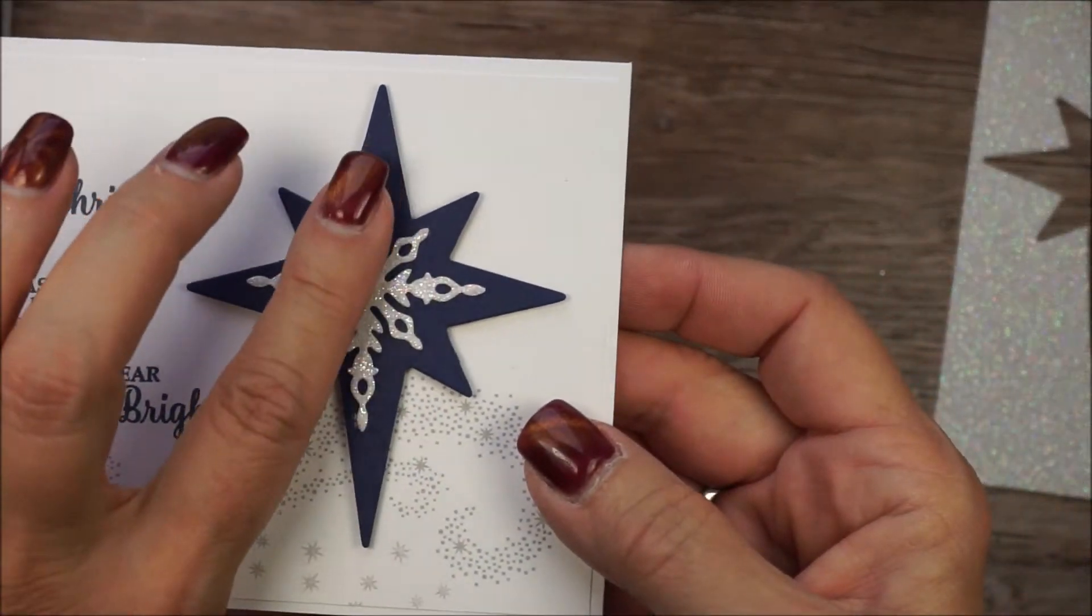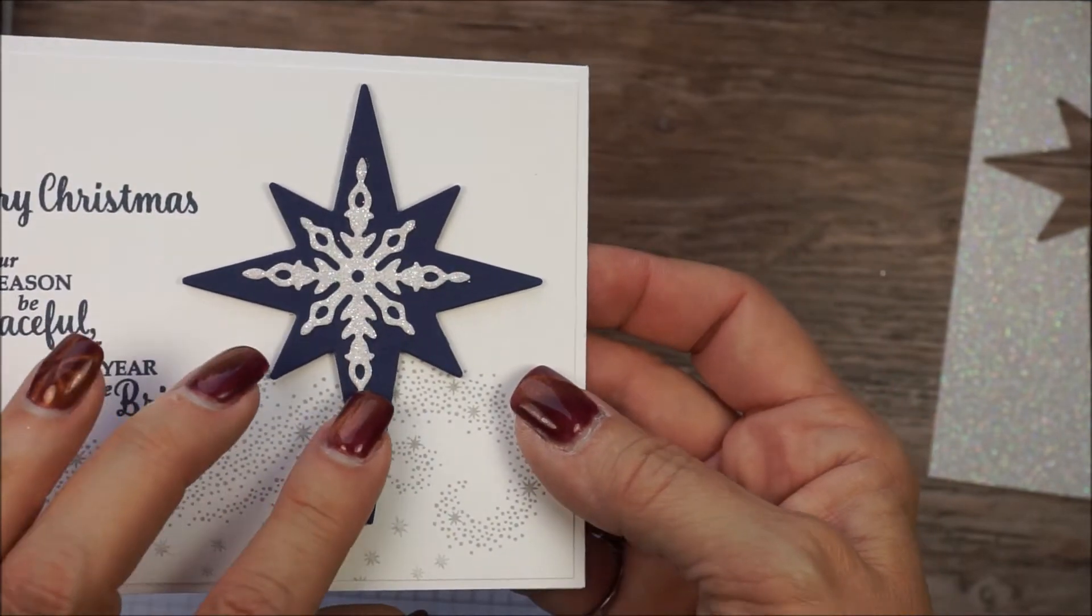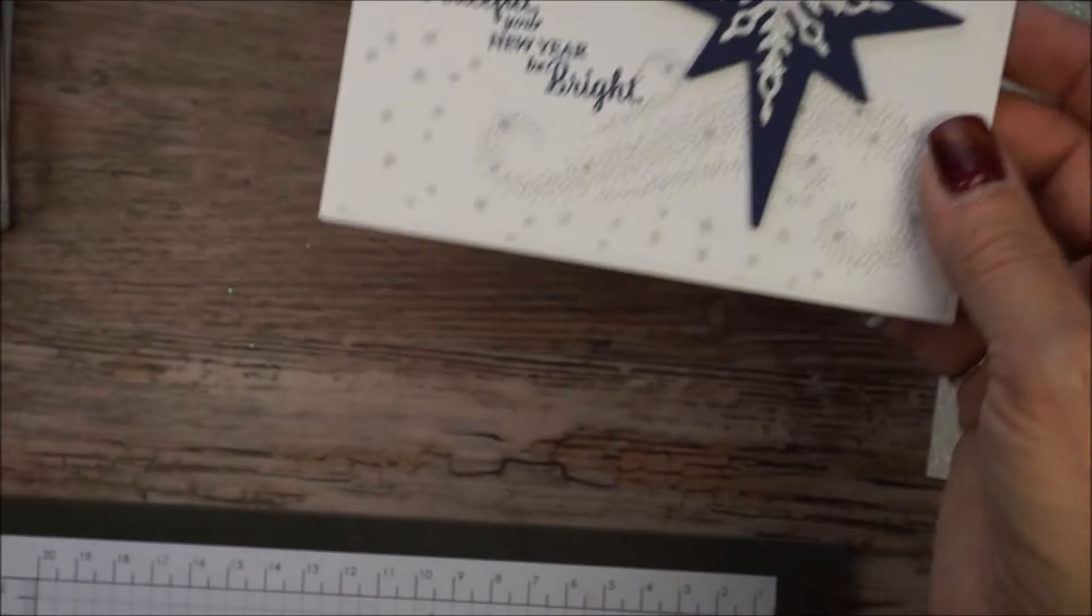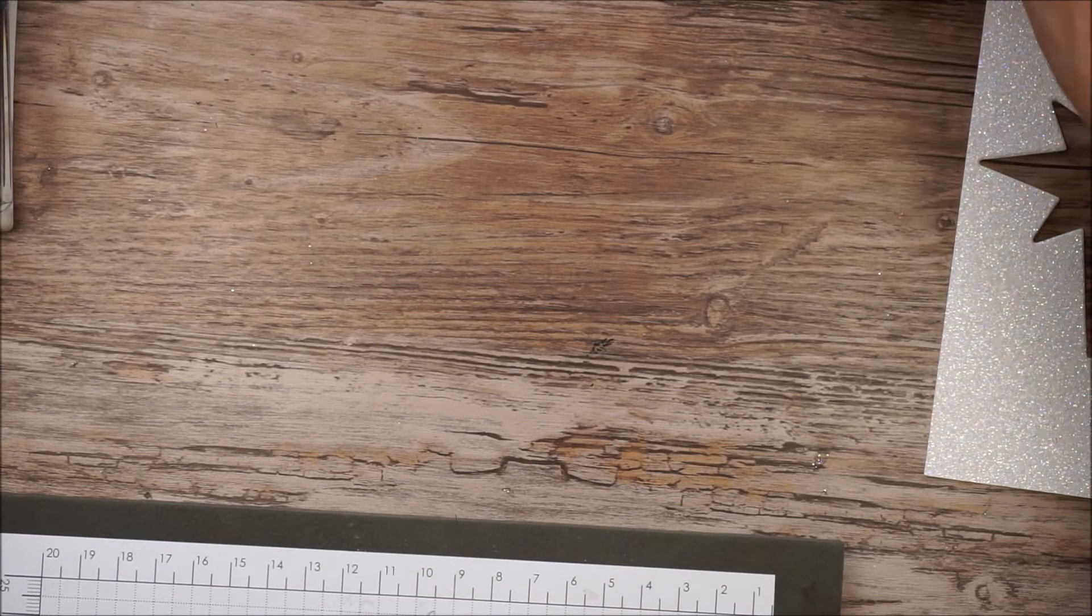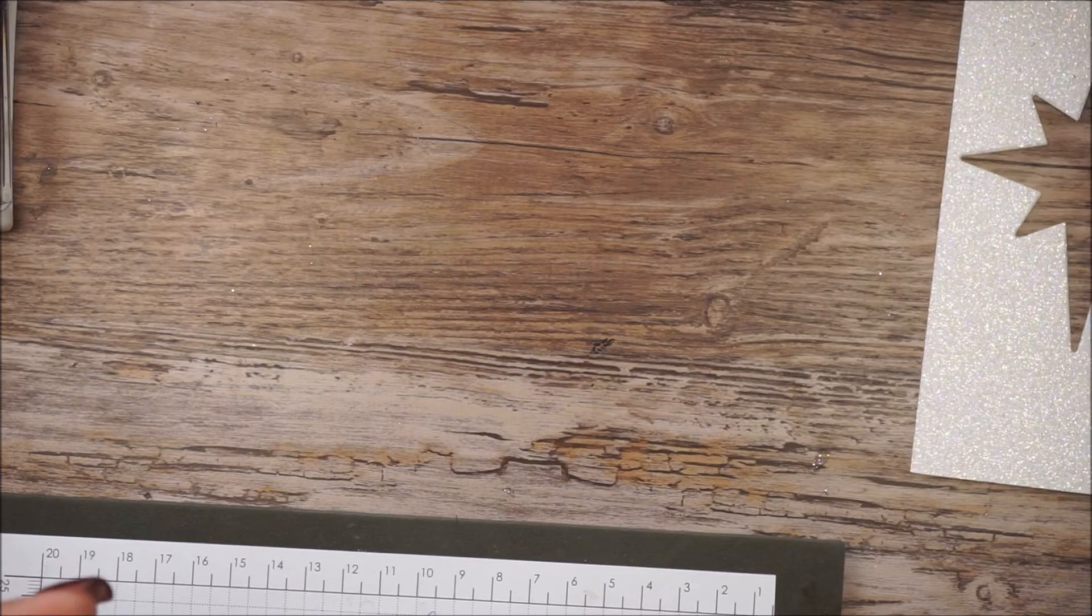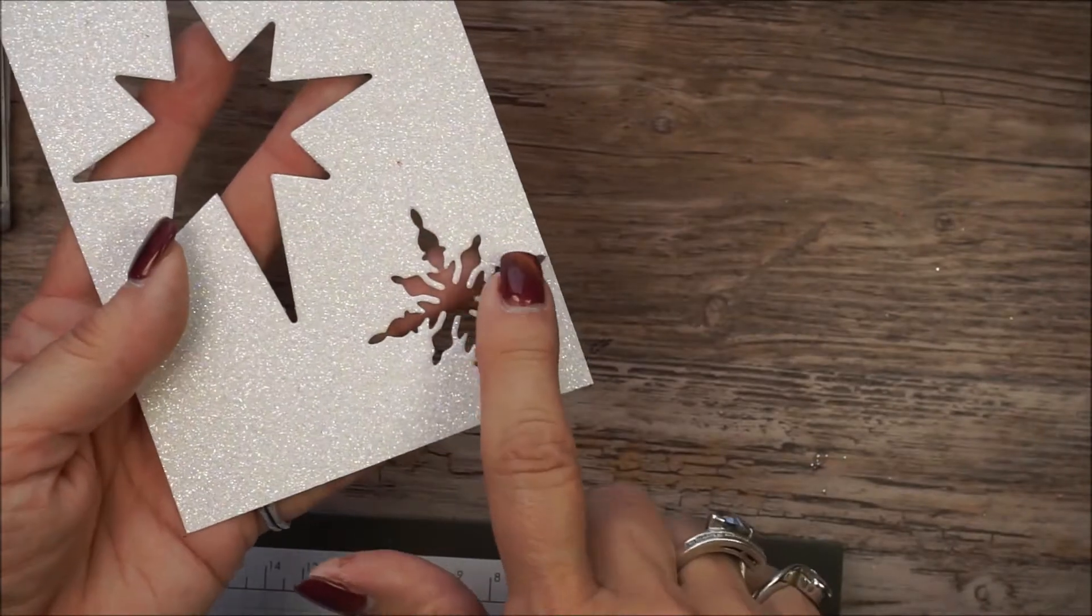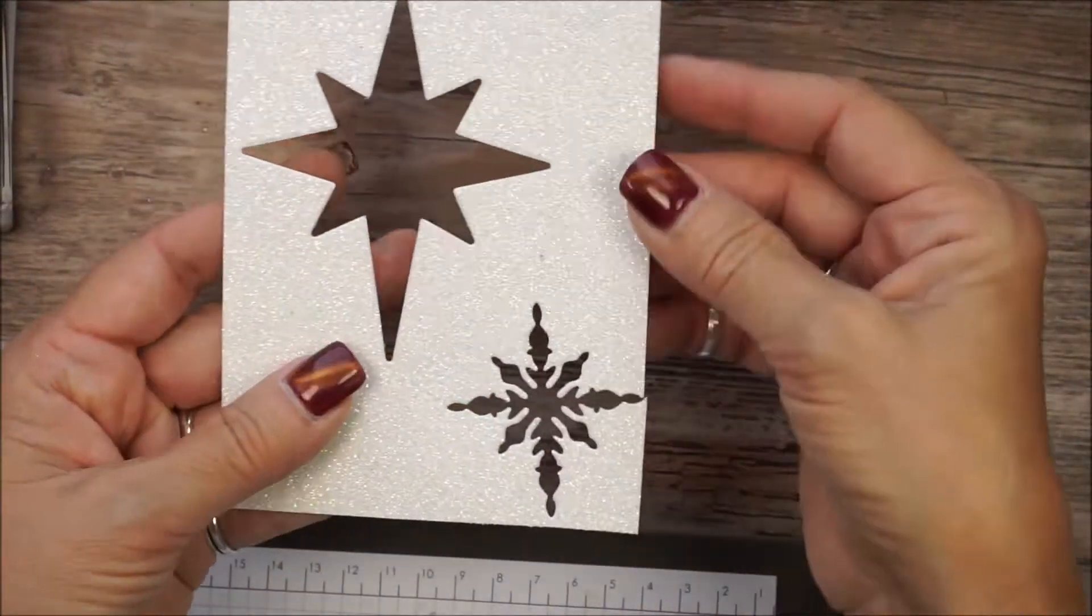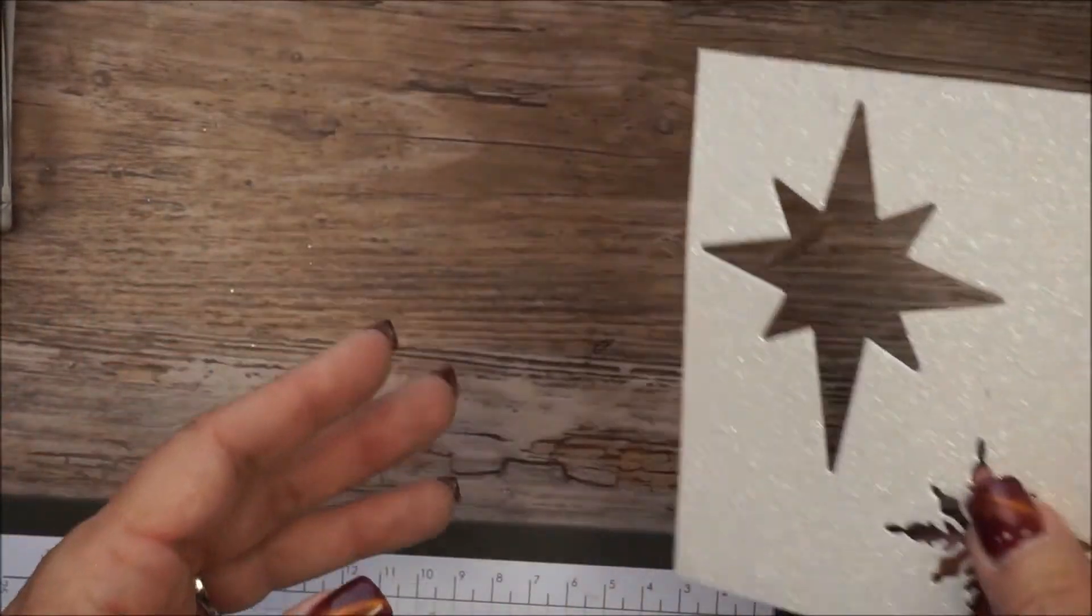First of all, you'll notice that the smaller star is cut out of the white glimmer paper. I don't know if you can tell that it's glimmer paper. I want to show you a trick. When you're using glimmer paper, first of all, I'm making five cards. I had a piece of glimmer paper and I cut out my smaller star for this first card. Then I had plenty of room to cut out my big piece. You'll see that card on another video.